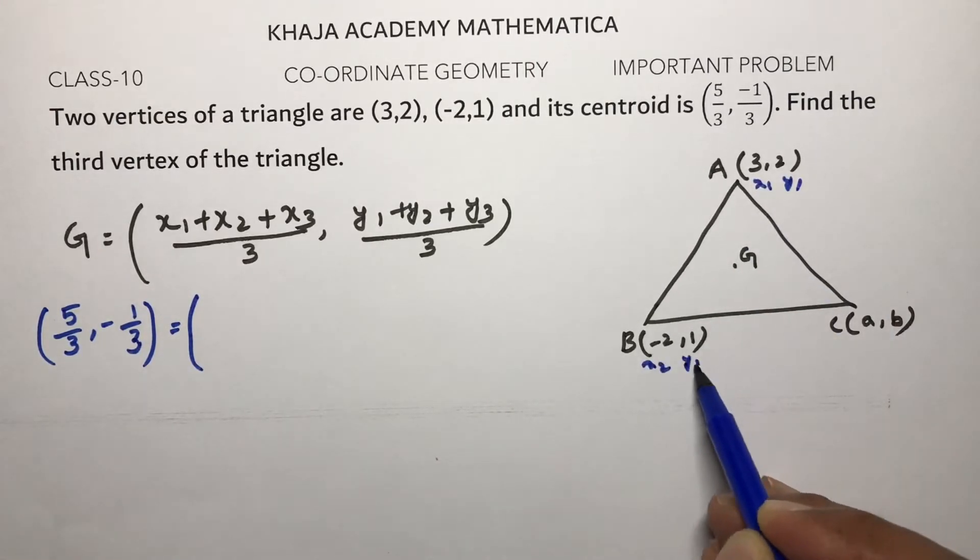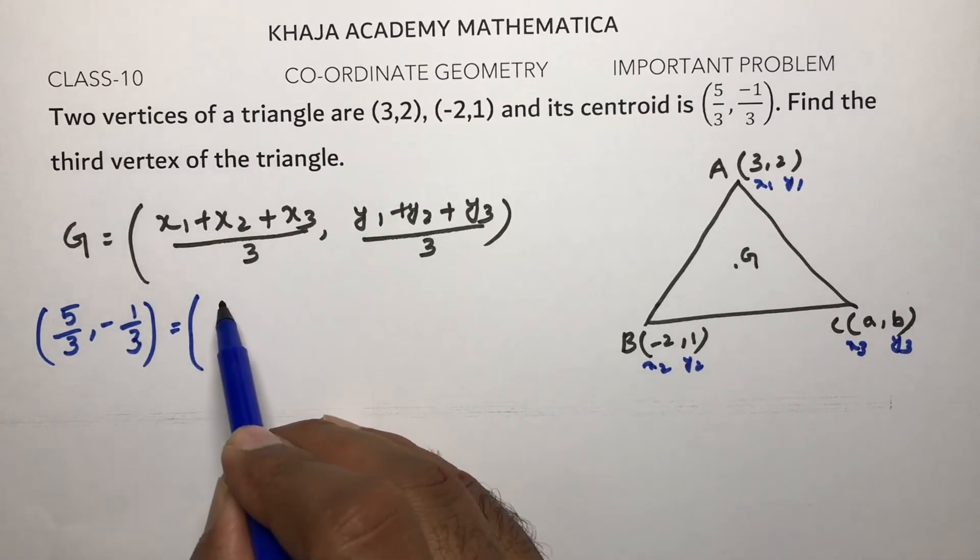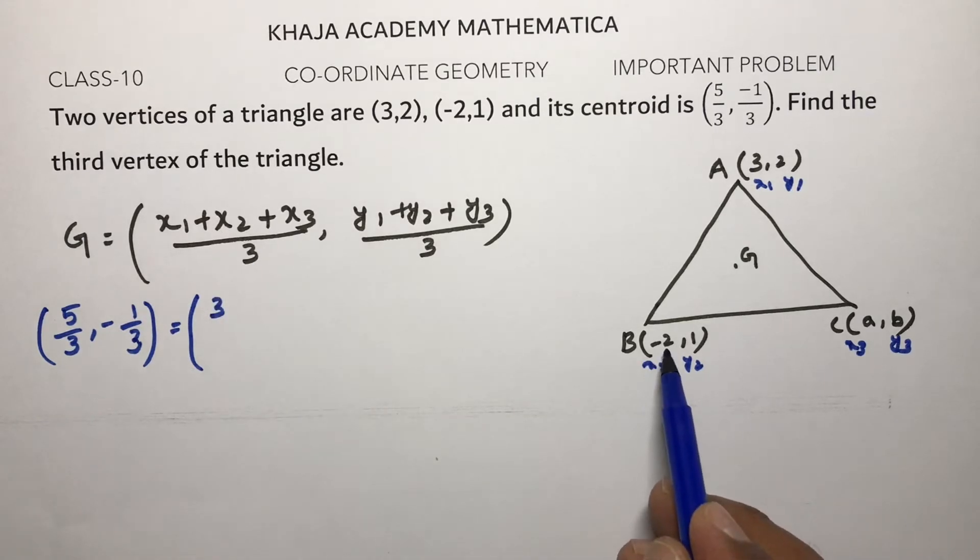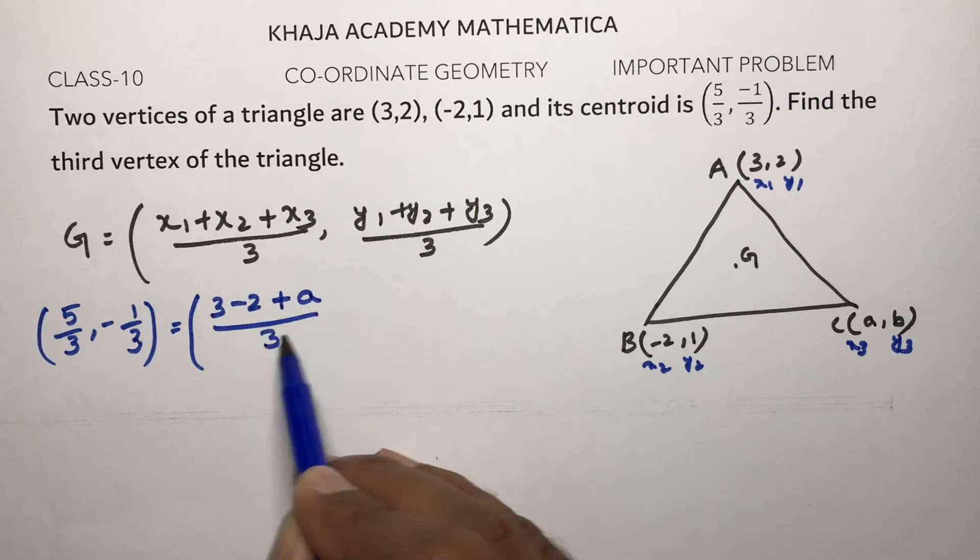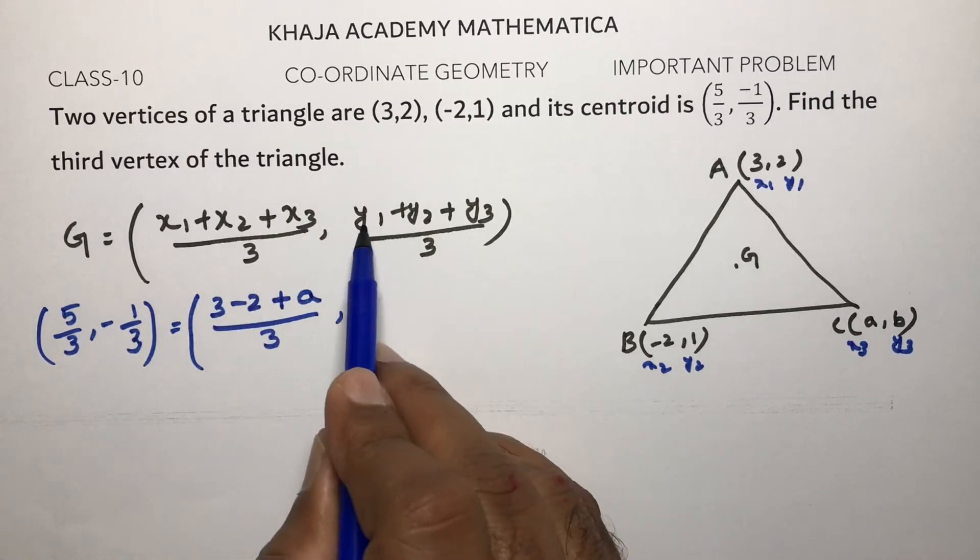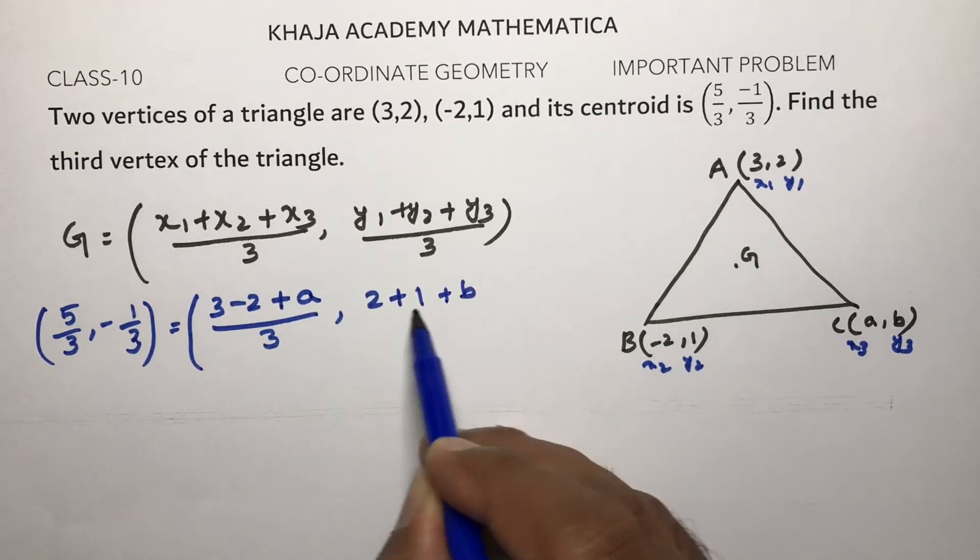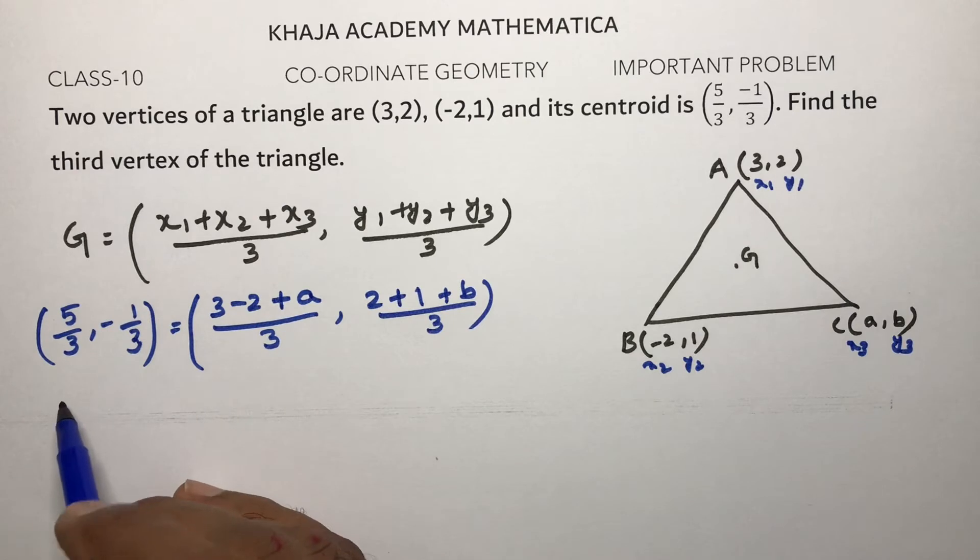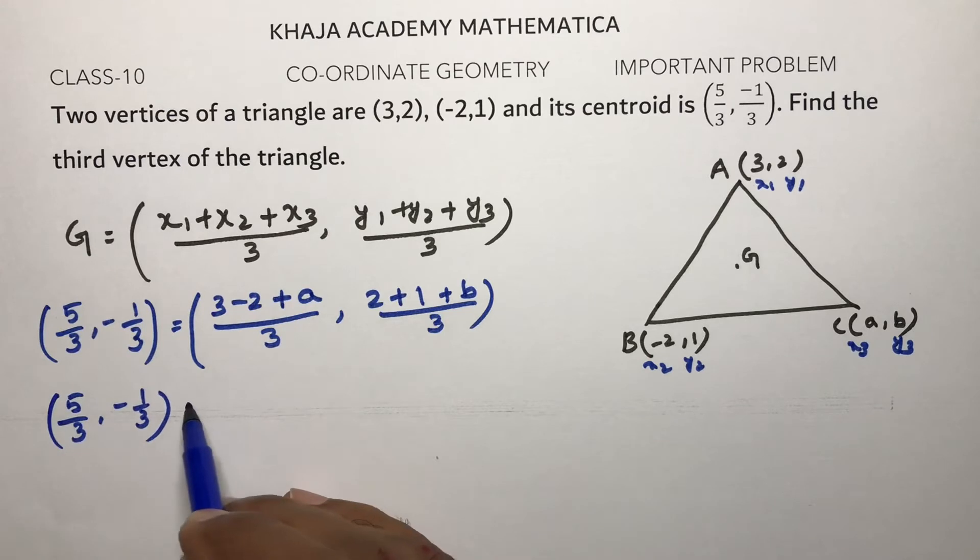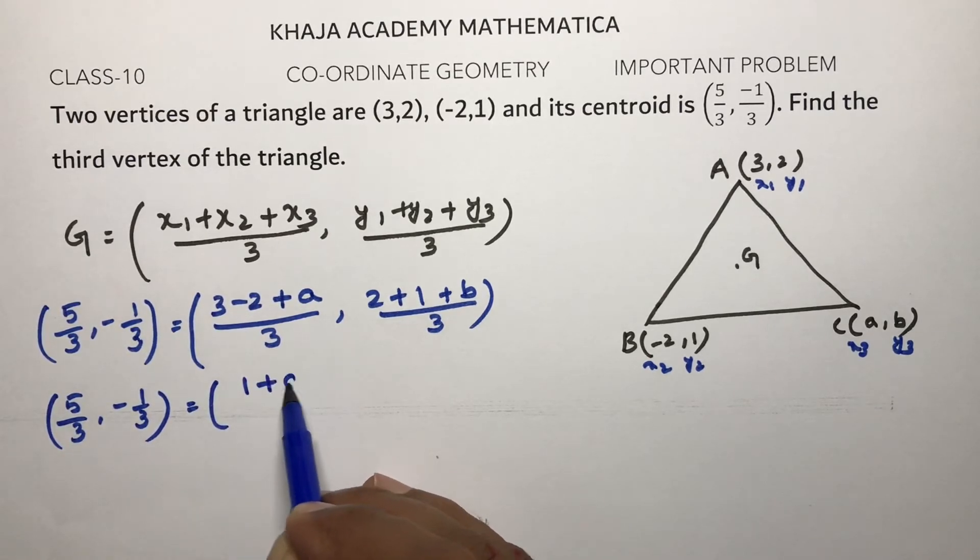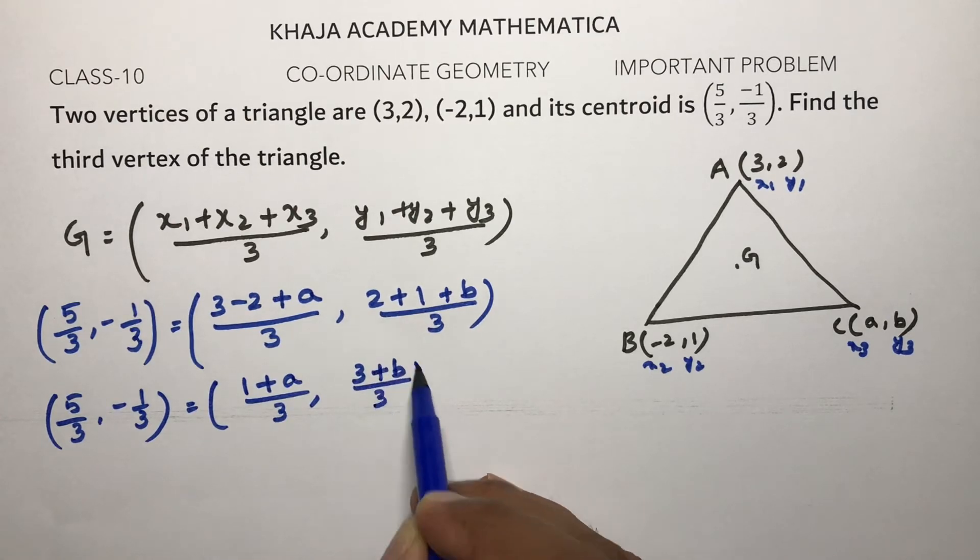x1, y1, x2, y2, x3, y3. So now x1 is 3 plus minus 2, so 3 - 2 + x3, I am considering it as a, divided by 3. y1 is 2 plus y2 is 1 plus b, divided by 3. Now here 5/3, -1/3 equals (3 - 2 + 1 + a)/3, (3 + b)/3.